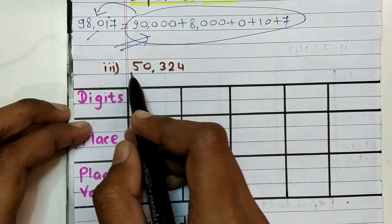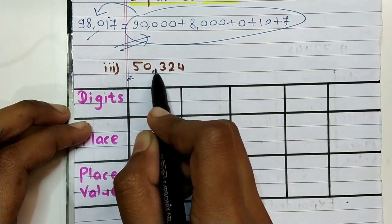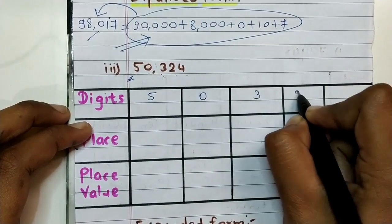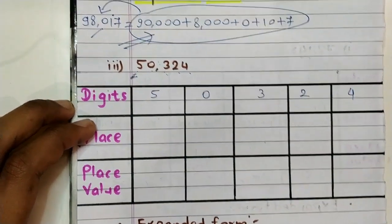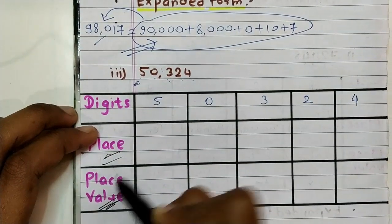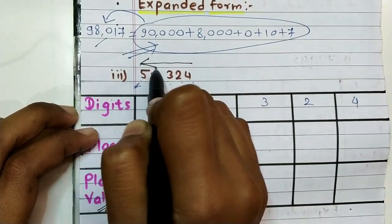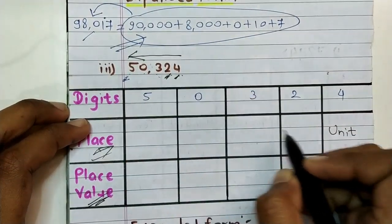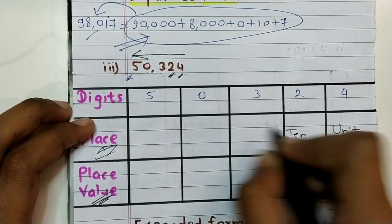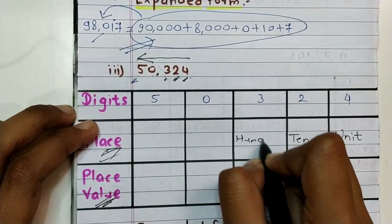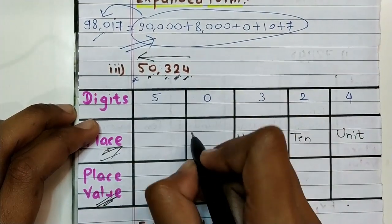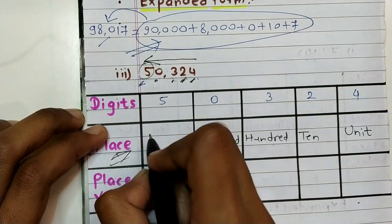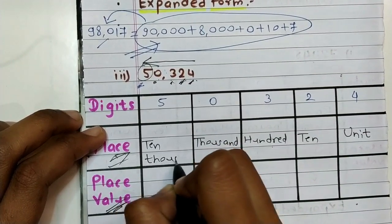50,324 is our given number. We write the digits: first is five, then zero, then three, two, and lastly four. For place value we go from right-hand side to left-hand side. Place of four is unit place, place of two is tens place, place of three is hundreds place.